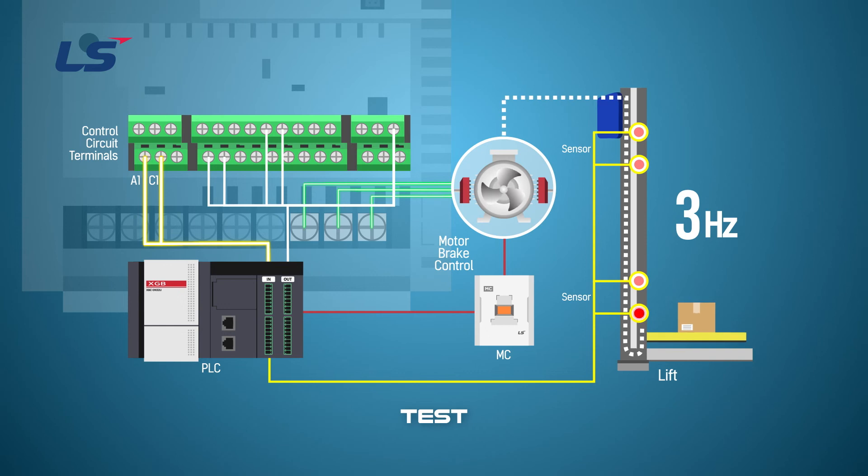When the closing frequency of the BR control is reached, the relay source signal is turned off from the inverter and the MC is opened, and the brake is closed and stopped.